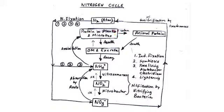When plants die, their proteins and amino acids are excreted and decay back into ammonia. This ammonia is converted back to nitrite by Nitrosomonas, and nitrite is converted back to nitrate by Nitrobacter. Key enzymes involved include nitrogenase, nitrate reductase, and nitrite reductase. We will discuss these processes in greater detail later.